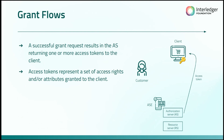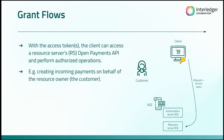A successful grant request results in the authorization server returning one or more access tokens to the client. GNAP allows you to actually request multiple access tokens with a single grant, which can streamline things. Those access tokens represent a set of access rights or attributes to the client — basically representing the authorization they've been given from the user.